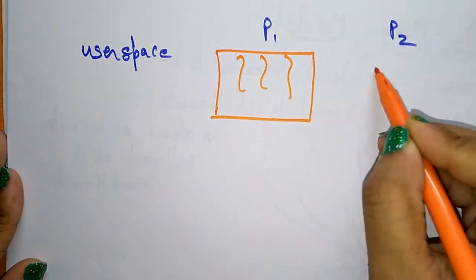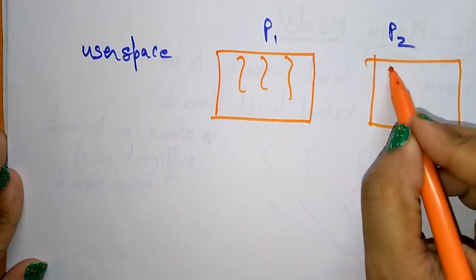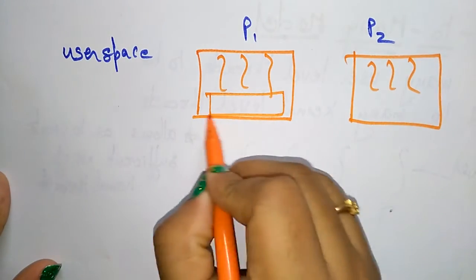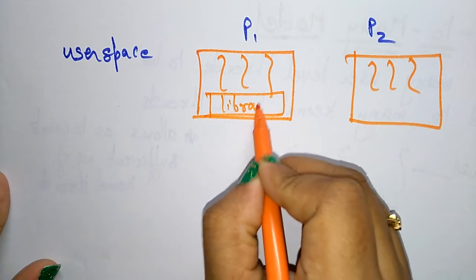So this P1 and P2 having many threads, that is many user level threads. Each thread is sharing only one thread library function.